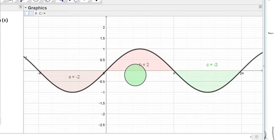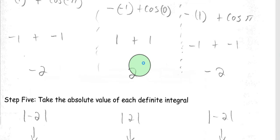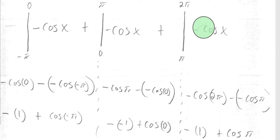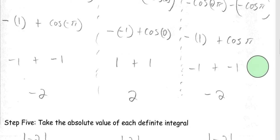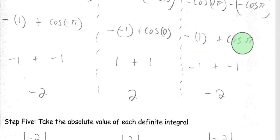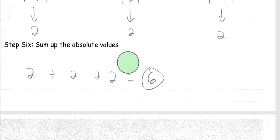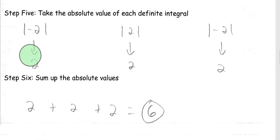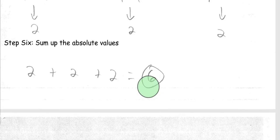That middle calculation gives us the area of two for the second region. Without the graph, you wouldn't necessarily know whether a given integral is negative or positive, which is why we always take the absolute value. For the third integral, with limits pi to 2 pi: negative cos(2 pi) minus negative cos(pi). Cosine of 2 pi is one, made negative; cosine of pi is negative one, giving negative one plus negative one equals negative two. Taking the absolute value of all three definite integrals gives us positive two, two, and two. We then sum all of those absolute values to get our total area.